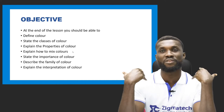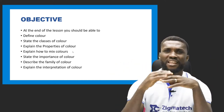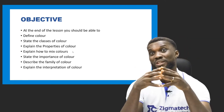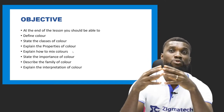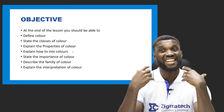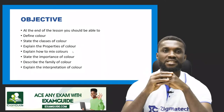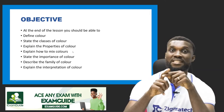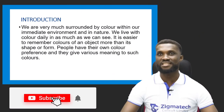You'll also know who was the very first person that experimented about color and his name. You'll learn to explain the properties of color, how to mix color, state the importance of color, describe the family of color, and finally interpret the meaning of each color — what a color means to one person can be quite different from what it means to another.